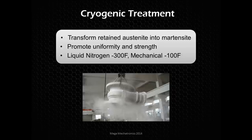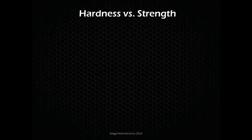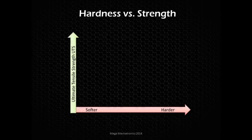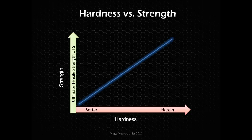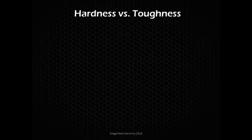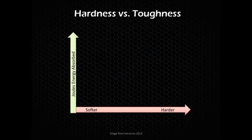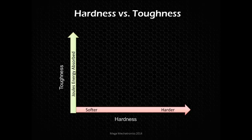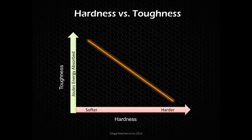Hardness does correlate with the strength of the material — as hardness goes up, so does ultimate tensile strength. There is also a hardness versus toughness relationship: the harder the material, the more brittle and the less tough it's going to be in general, though it depends on the alloy.